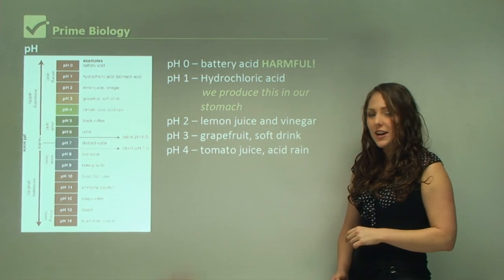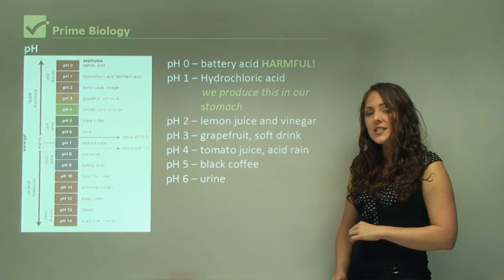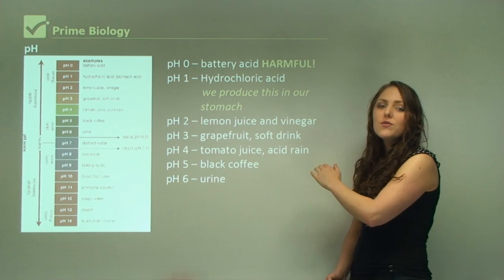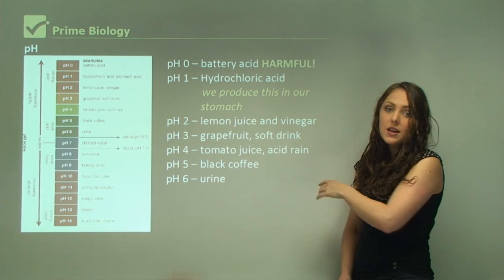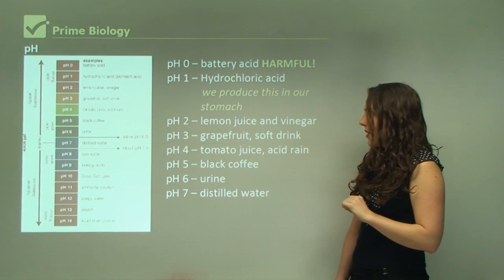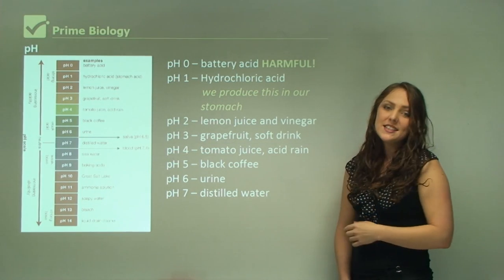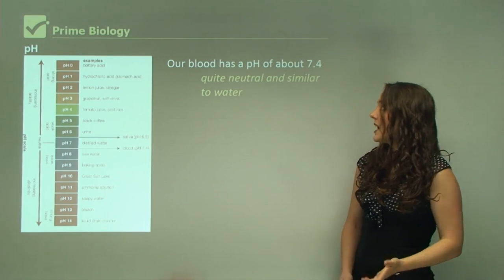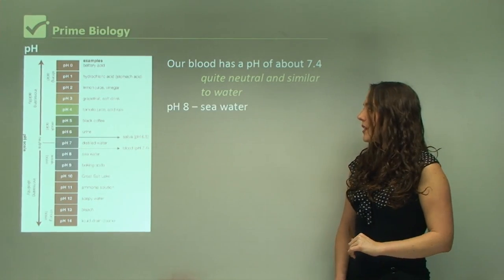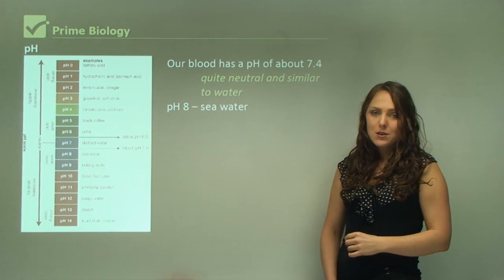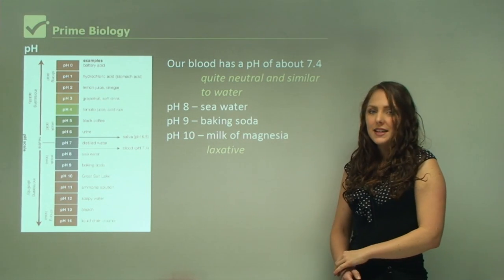At pH 3, grapefruit and soft drink are very safe for consumption. At pH 4 we have tomato juice and acid rain. At pH 5 we have black coffee. At pH 6 we have urine. All of these foods we consume have sort of a sickly sweet taste. That's how we can tell if it's acidic. pH 7 is distilled water. Our blood has a pH of about 7.4, so it's quite neutral and very similar to water.